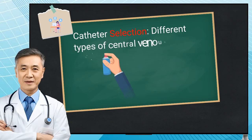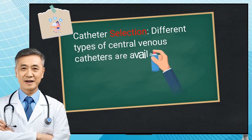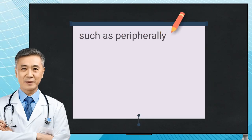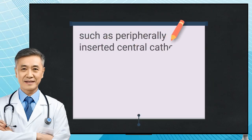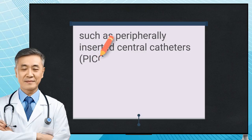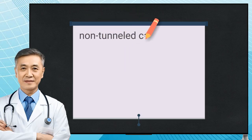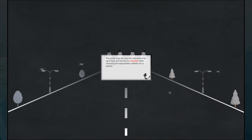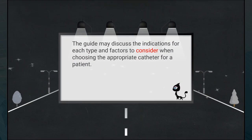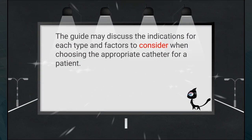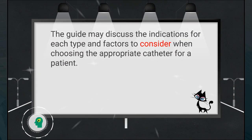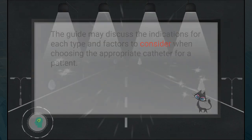Catheter selection: different types of central venous catheters are available, such as peripherally inserted central catheters, PICCs, non-tunneled catheters, and tunneled catheters. The guide discusses the indications for each type and factors to consider when choosing the appropriate catheter for a patient.